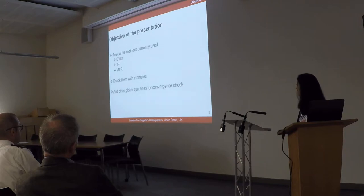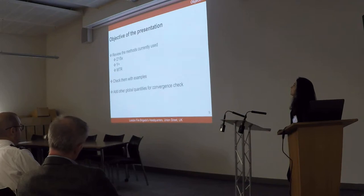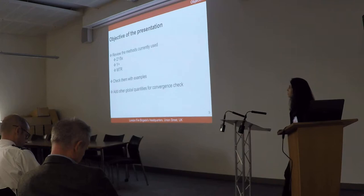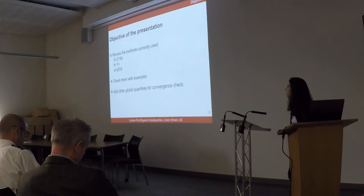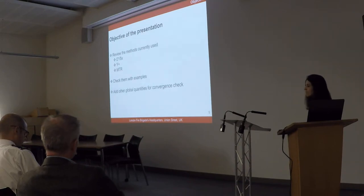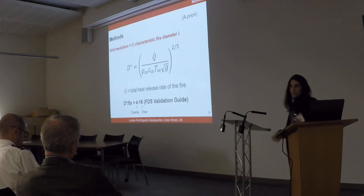Several methods can be used to optimize the grid resolution and ensure that the grid we choose allows for obtaining reliable results. I will talk about the ratio of the characteristic diameter D* to the grid size Δx, the Y-plus, and the MTR. We will try to track them with some examples and finally try to add other global quantities for the convergence check.